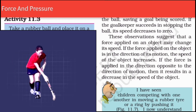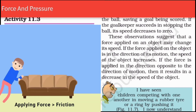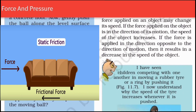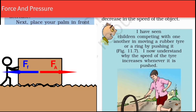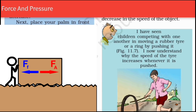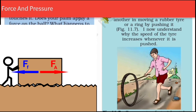These observations suggest that a force applied on an object may change its speed. If the force is applied in the direction of motion, the speed of the object will increase. But if the force is opposed to the direction of motion, the speed will decrease. Children combating with one another in a moving tire or ring by pushing it is a good example of why the speed of the tire increases whenever it is pushed repeatedly.